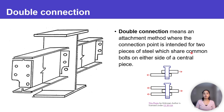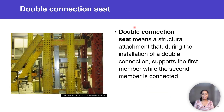A double connection involves two pieces of steel which share common bolts on either side of a center piece — this is the common piece, and these bolts are common. Double connection sheath means a structural attachment that, during the installation of a double connection, supports the first member while the second member is connected.